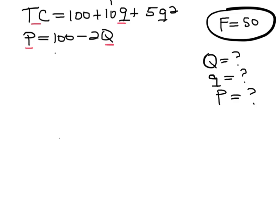But we know that if the firm maximizes profits, then we know that the marginal cost, which is going to be 10 + 10q, is going to be equal to the price, which is 100 - 2Q. So now we have another equation here.